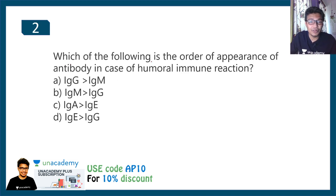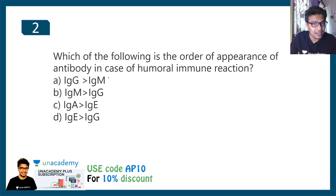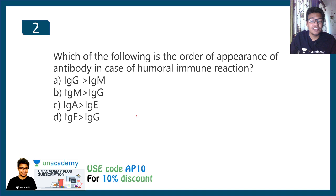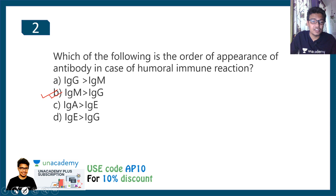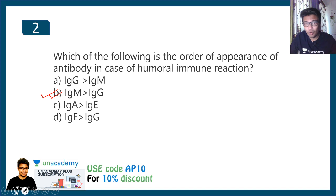The next question asks: which of the following is the correct order of antibody appearance in a humoral immune reaction? Option A: IgG then IgM; Option B: IgM then IgG; Option C: IgA then IgE; Option D: IgE then IgG. You need to understand the concept of primary versus secondary immune response. The correct answer is IgM first, then IgG. You can get the video link explaining this concept in the I button.